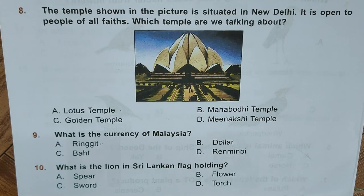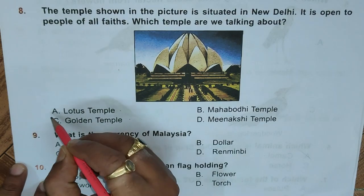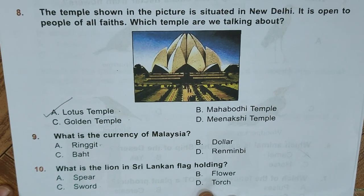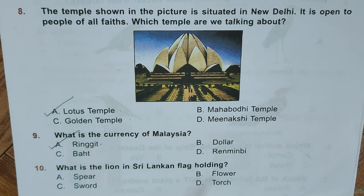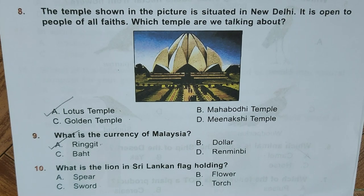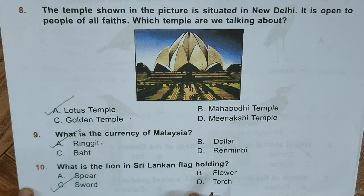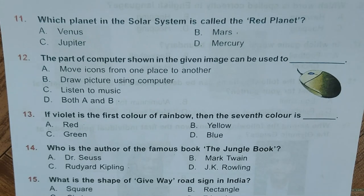Question 8: The temple shown in the given picture is situated in New Delhi and is open to people of all faiths. Which temple are we talking about? A. Lotus Temple, B. Mahabodhi Temple, C. Golden Temple, D. Meenakshi Temple. Correct answer is A, Lotus Temple. Question 9: What is the currency of Malaysia? A. Ringgit, B. Dollar, C. Baht, D. Rial. Correct answer is A, Ringgit.